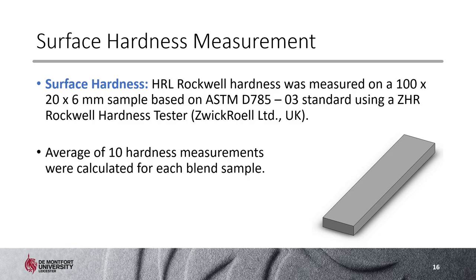For measuring surface hardness, cuboids with geometry 100 × 20 × 6 mm were fabricated using the SLS 3D printer. Hardness testing was carried out based on the ASTM D785-03 standard using a quarter-inch indenter. HRL hardness was measured 10 times for each sample, and the average hardness for each blend sample was then calculated.